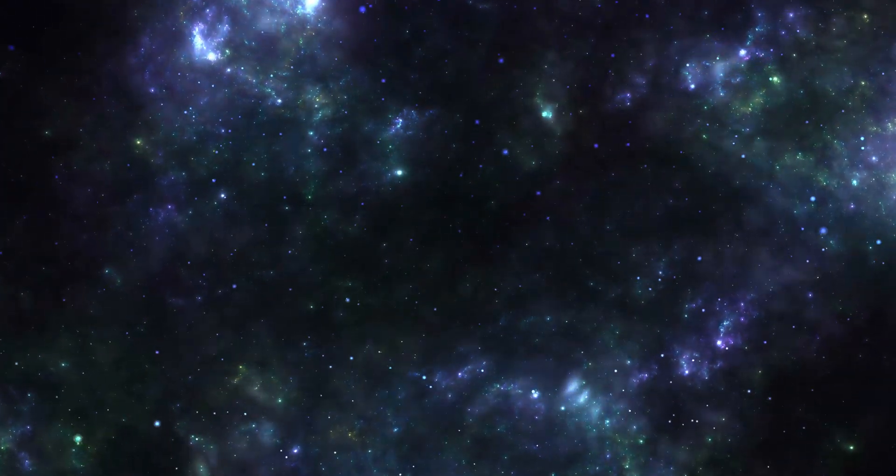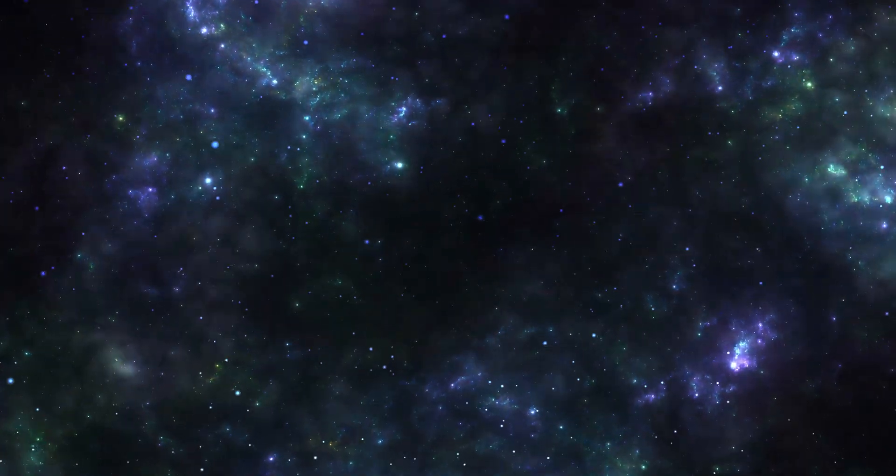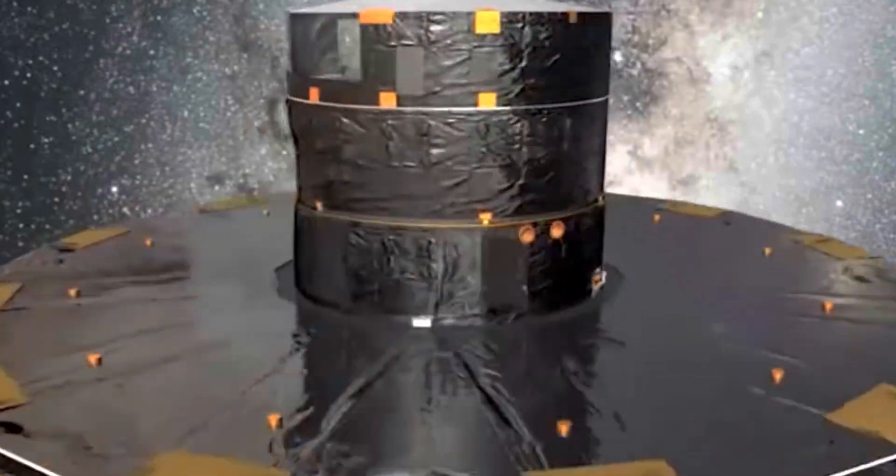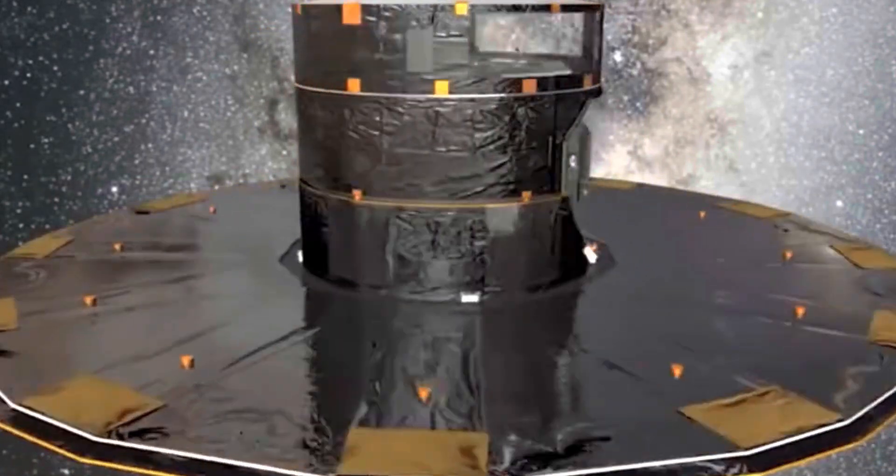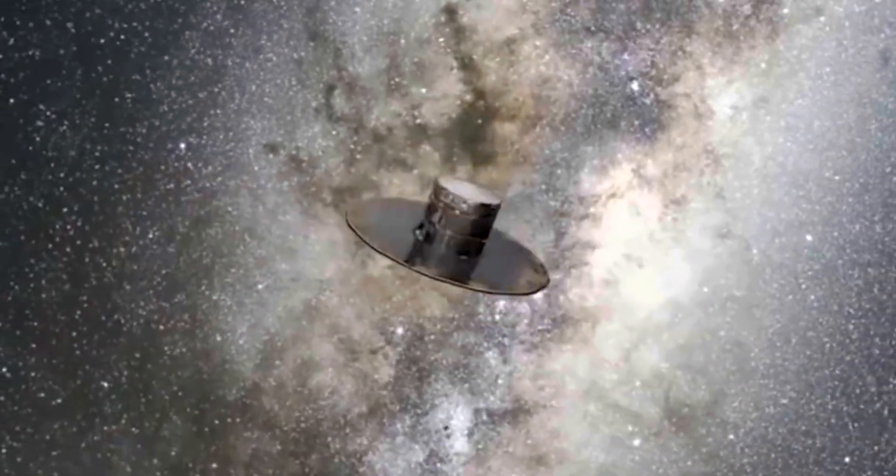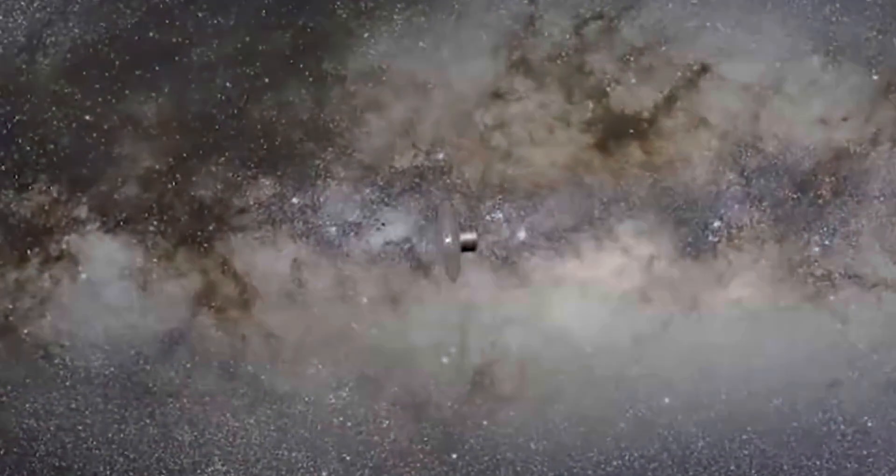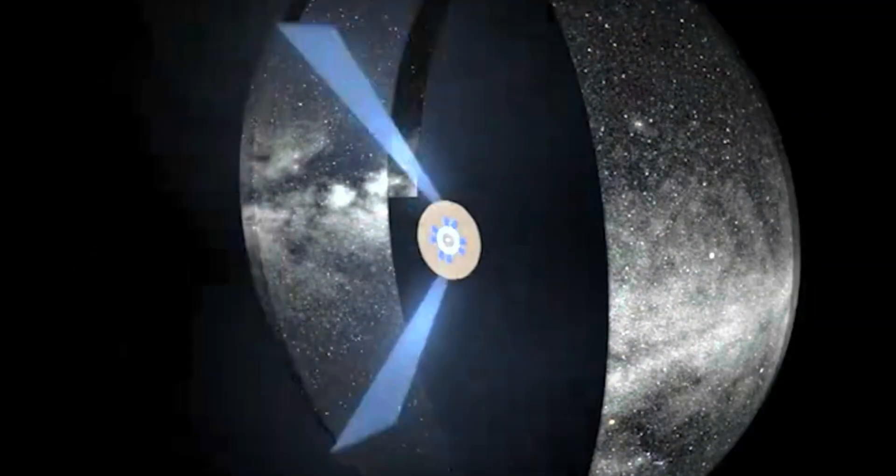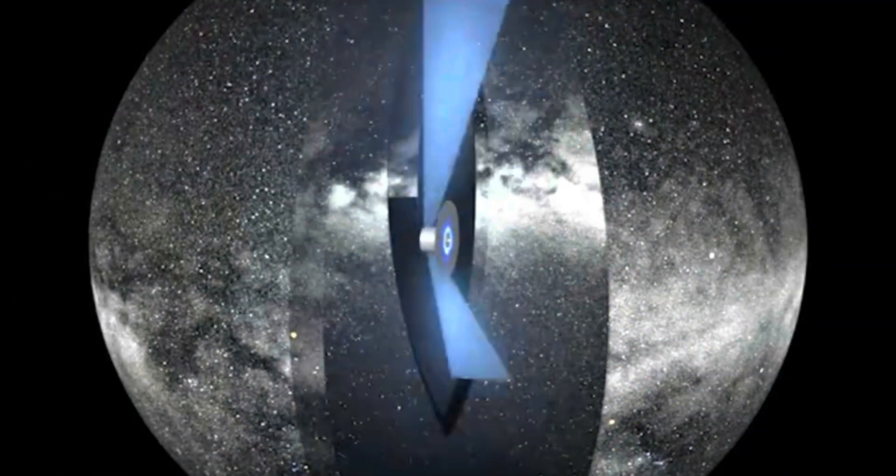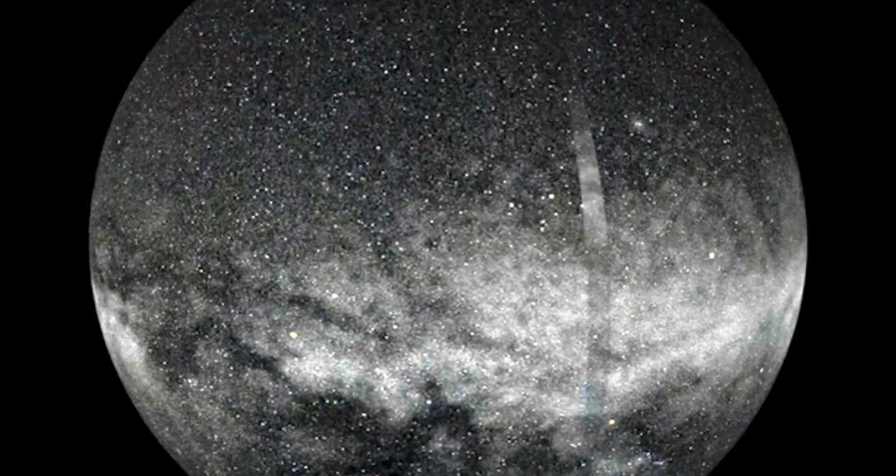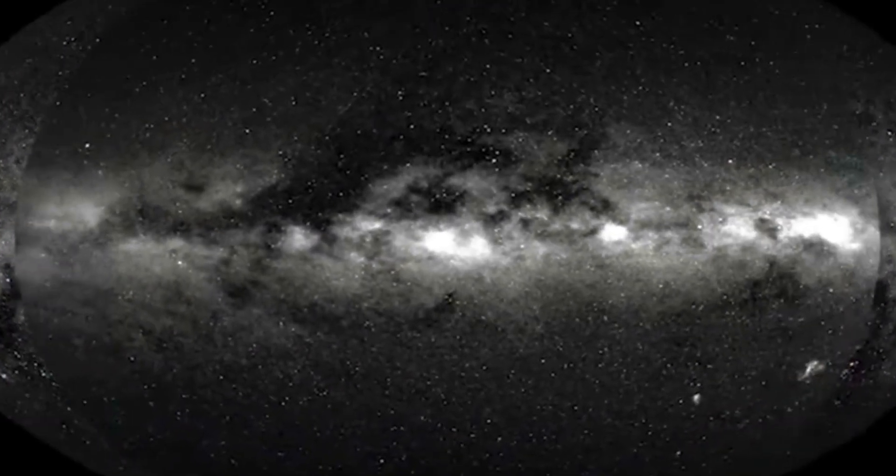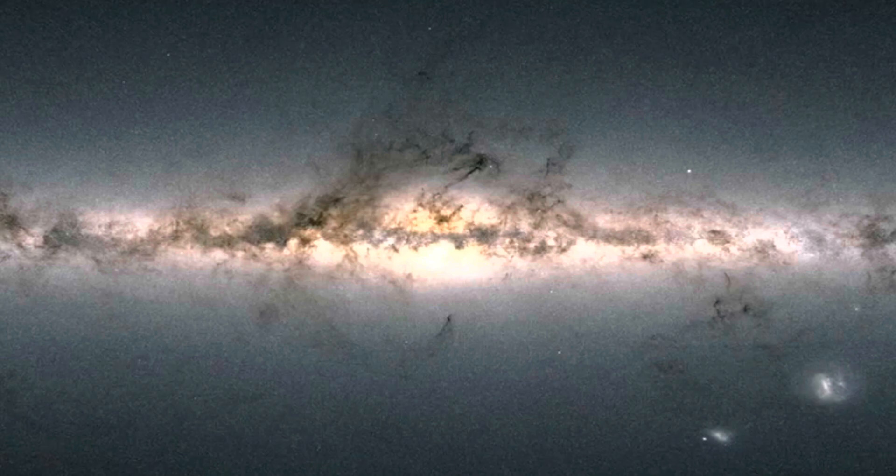It's been orbiting the sun at a stable point in space called L2, where it's had a front row seat to the galaxy. And for over a decade, it's been scanning the sky star by star, gathering data more precise than anything we've ever had. To give you an idea, Gaia can measure the movement of a star down to a distance smaller than a human hair, from hundreds of miles away.